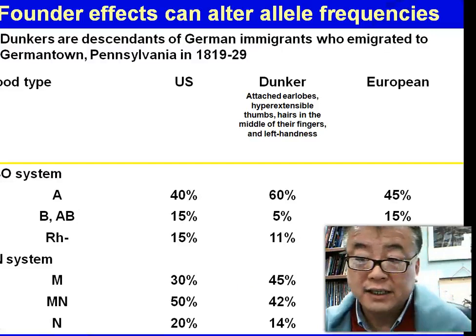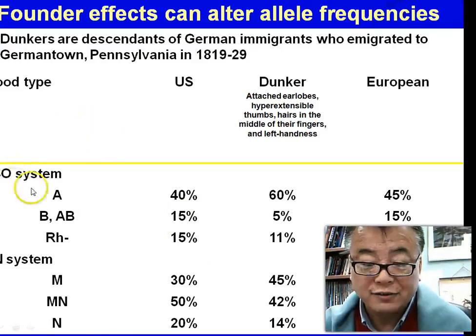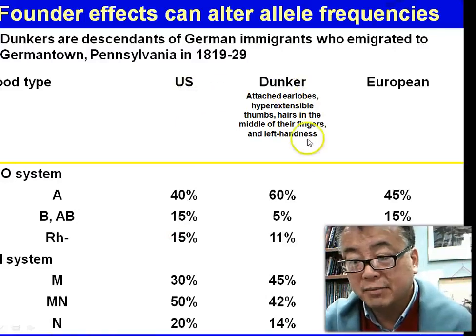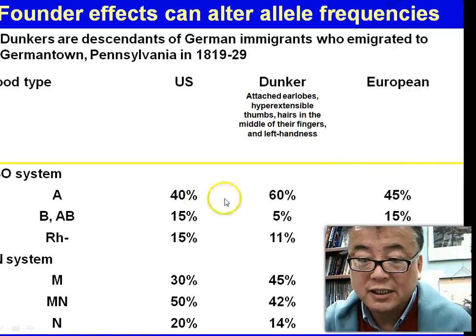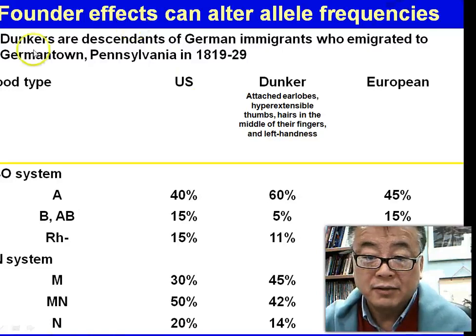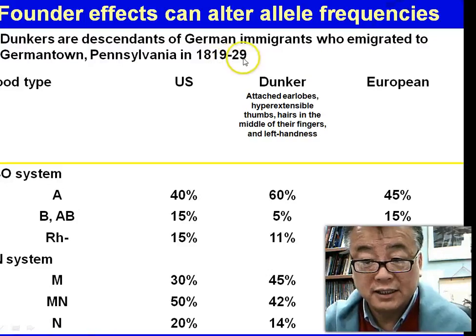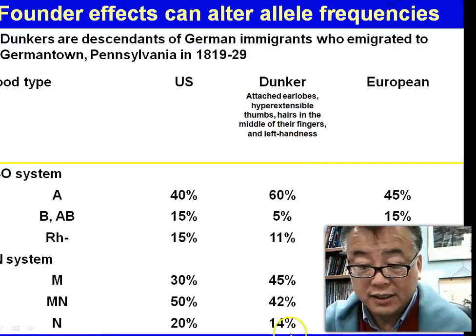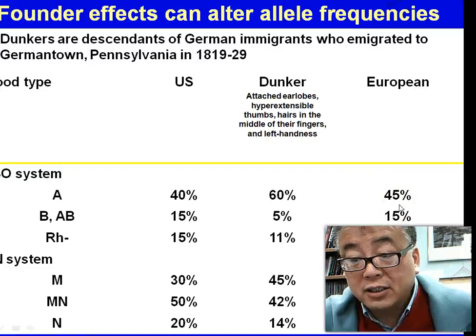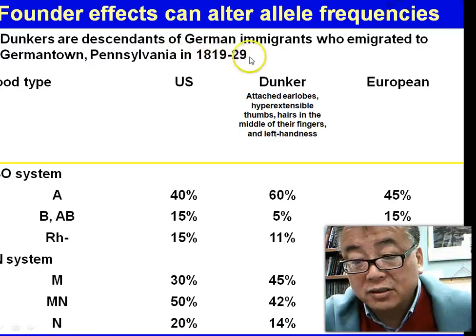The founder effect can alter allele frequencies. Looking at the ABO and MN blood type systems, we see the U.S. population, the Dunker population in the U.S., and the European population each having different allele frequencies caused by their founders. Dunkers are descendants of German immigrants who moved to Germantown, Pennsylvania in 1819. The Dunker population shows different frequencies of ABO and MN blood types — the founder effects changed their frequency over about 170 to 180 years.